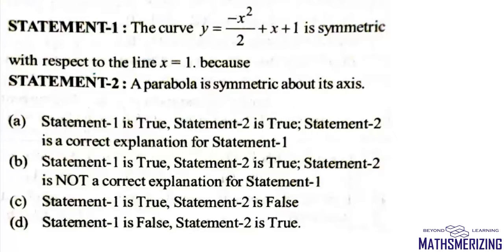The curve y equals minus x squared upon 2 plus x plus 1 is symmetric with respect to the line x equal to 1, because a parabola is symmetric about its axis. So clearly statement 2 is correct. Now we need to find if statement 1 is also correct.